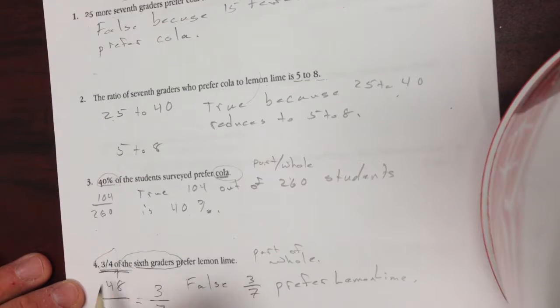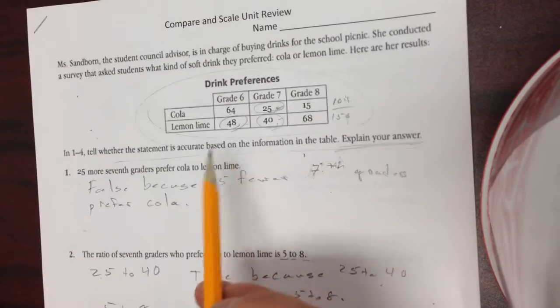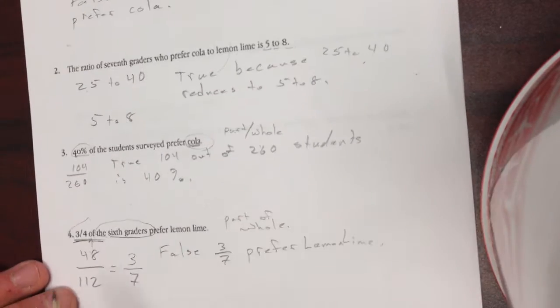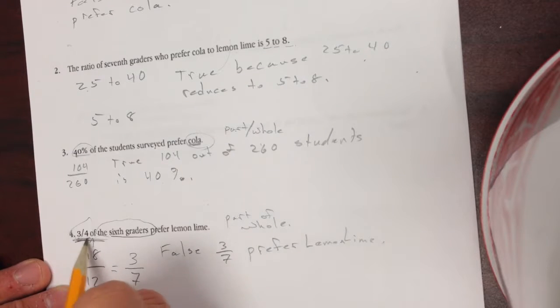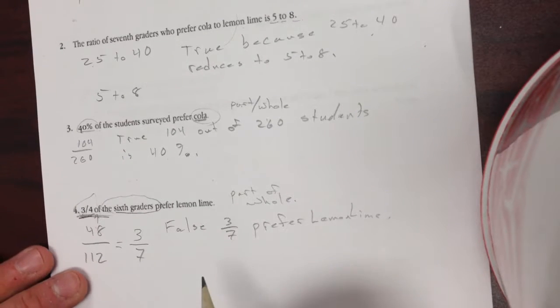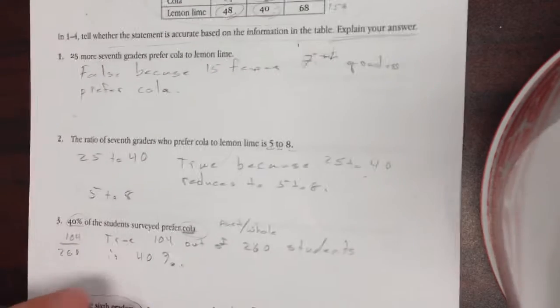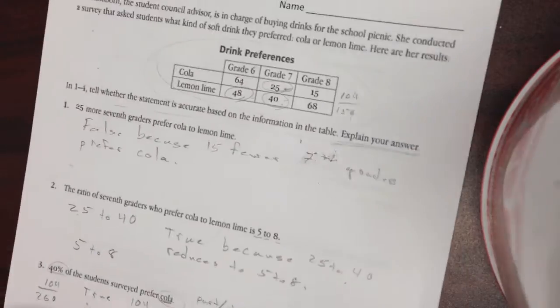Now, if you did this as a ratio, 48 over 64, it's going to come out to 3-to-4 ratio, but this is a fraction. It's not a ratio. Fraction is part-to-whole, ratio part-to-part. So that one is really tricky. Careful.